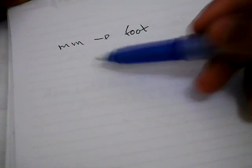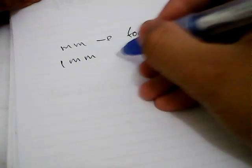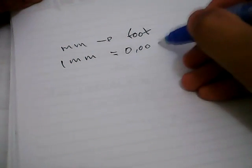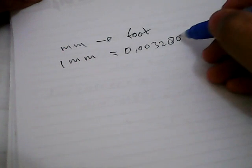Okay, the first thing we need to know before we're dealing with an example problem: we need to know that one millimeter is equal to 0.00328084 foot.